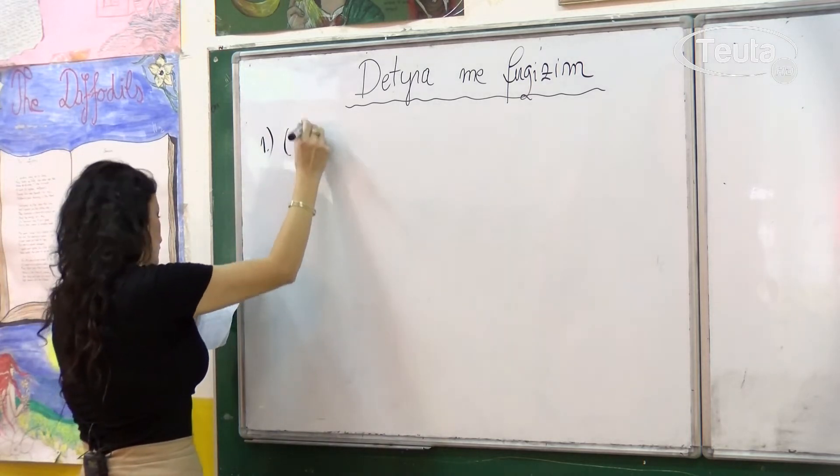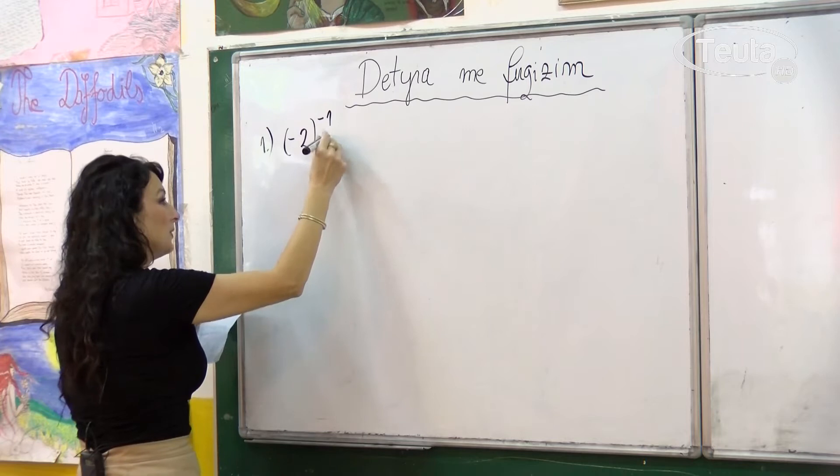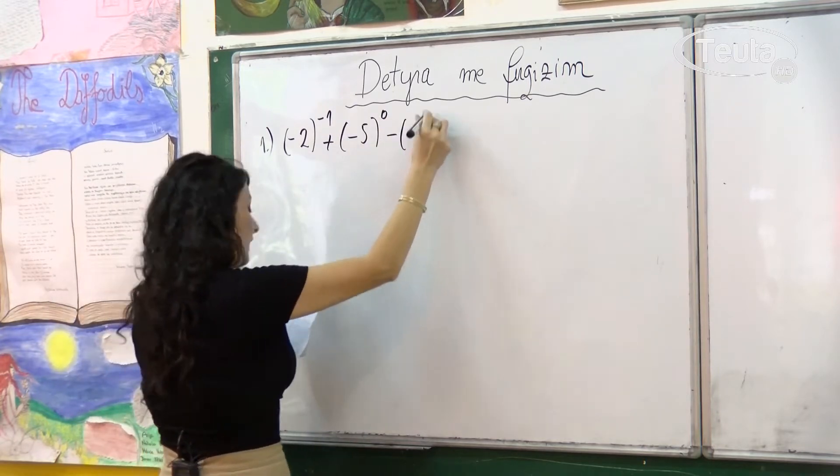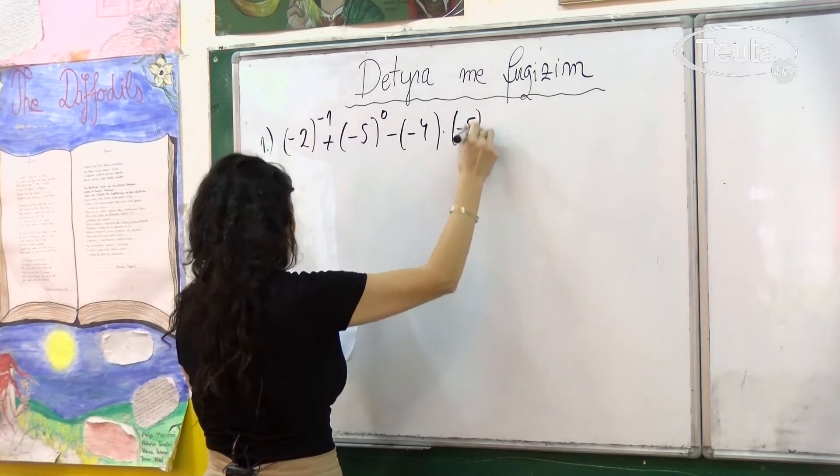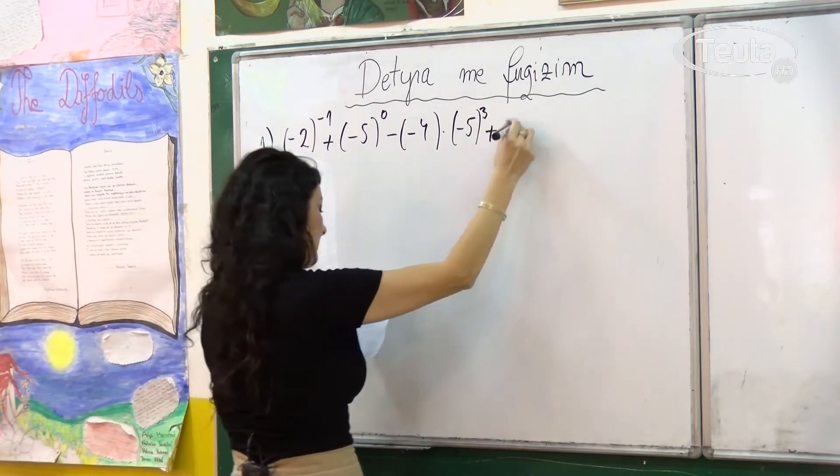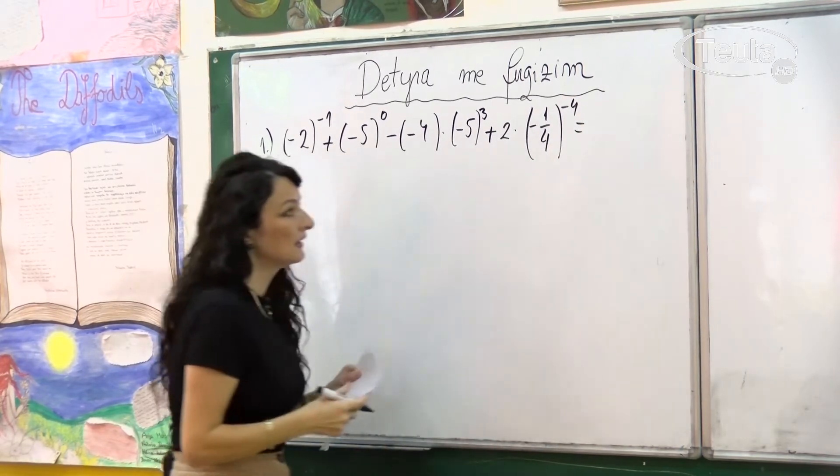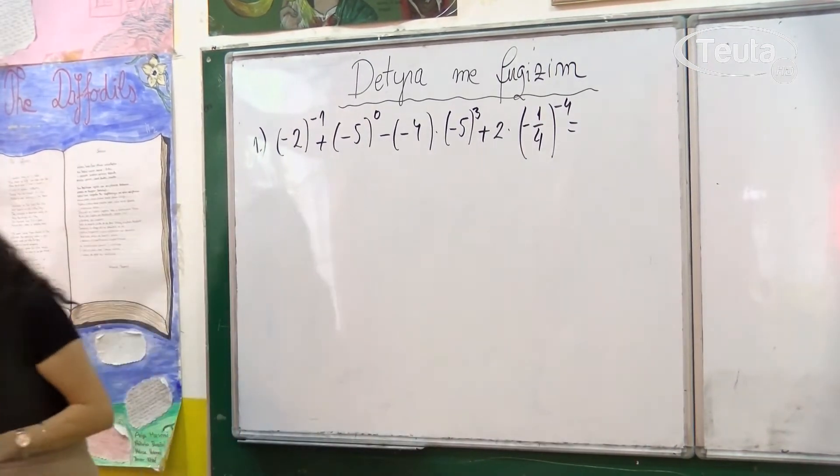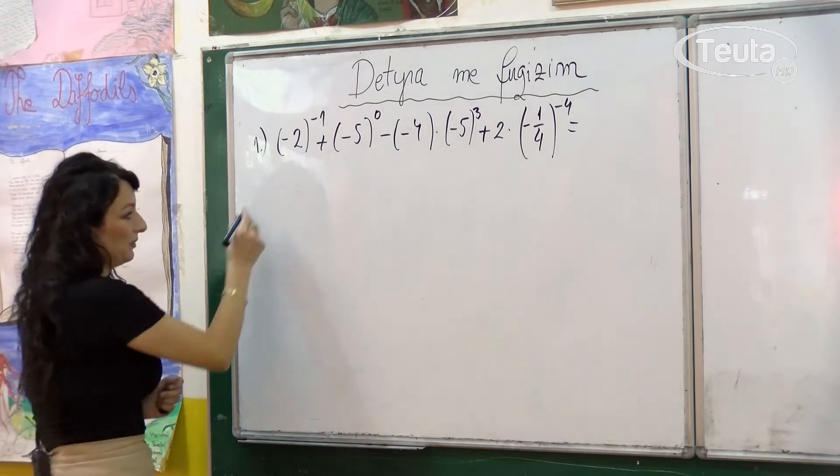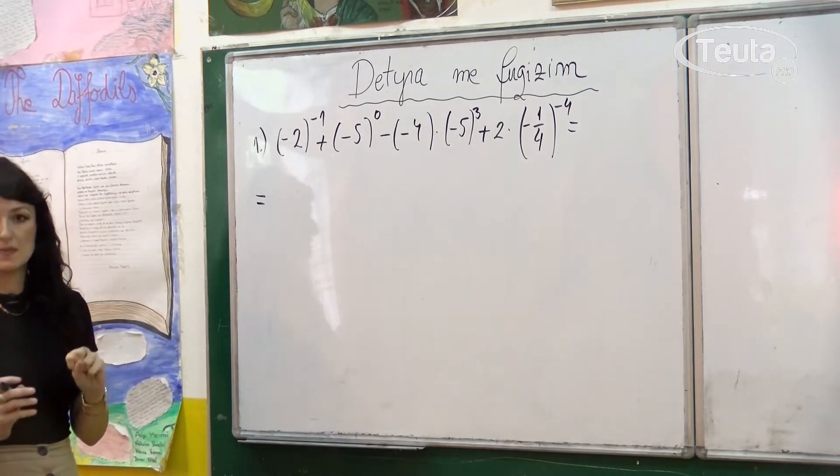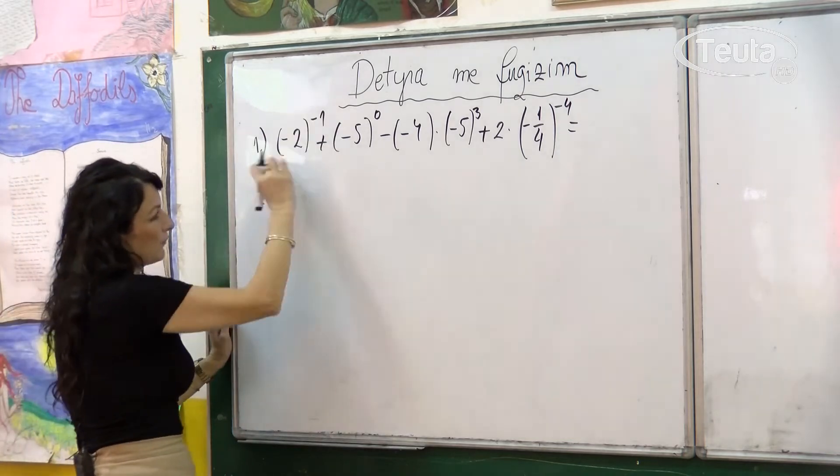Detyra e parë është një detyrë numerike me fuqitë dhe thotë të gjesh vlerën e shprehjes. Detyra thotë: minus 2 në fuqinë minus 1 plus minus 5 në 0 minus minus 4 herë minus 5 në të tretën plus 2 herë minus 1 e 4 krejt në fuqinë minus 4. Kjo shprehje në fillim duket e komplikuar, por një nga një kur t'i lirohen nga fuqitë, do të shohim se është e thjeshtë.